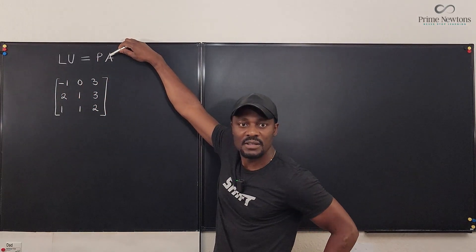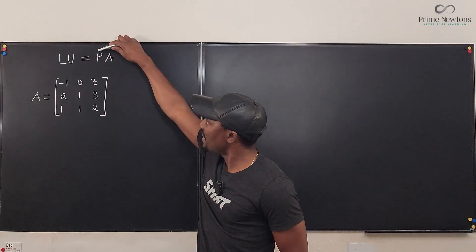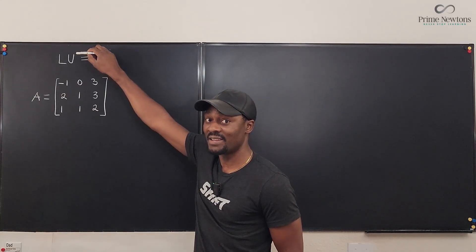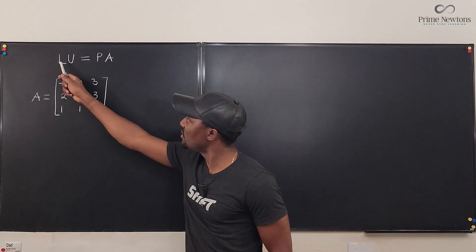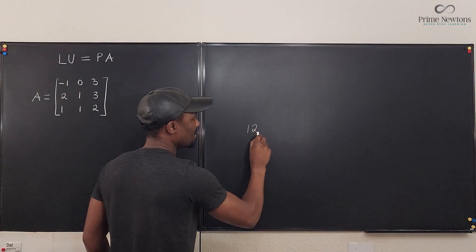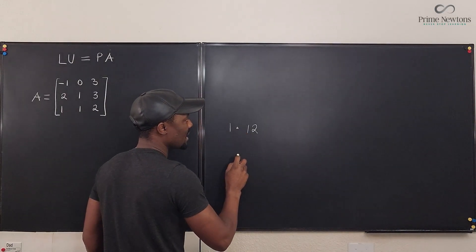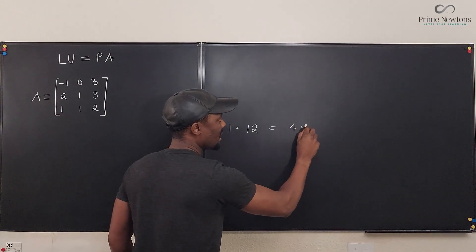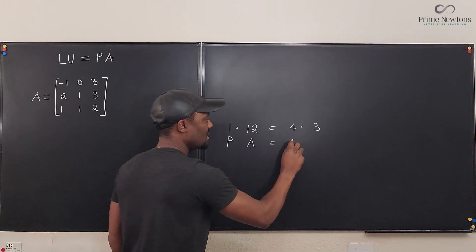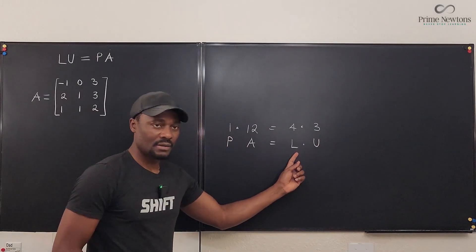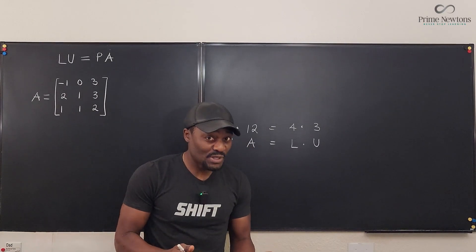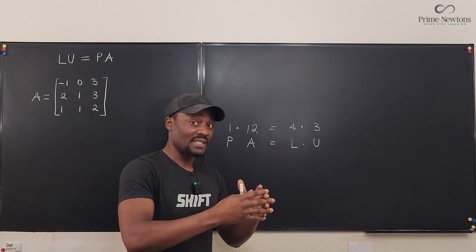Look at this matrix — let's say this is A. Then you would expect P to not make any changes to A if you want to retain the same value on the other side, especially if you want the product of these two to retain the value of A. Imagine that 1 times 12 is the same thing as 4 times 3. You could look at this as P times A equals L times U, where L is a matrix, U is a matrix, A is a matrix, and P is a matrix. You can actually write a matrix as a product of two matrices.